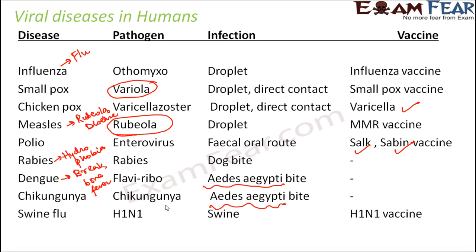Swine flu was all over the media a couple of years ago, with many people dying from it. This flu was caused by the H1N1 virus, which is a triple-reassorted flu virus. The infection spread through swine — pigs — and the vaccine available was the H1N1 vaccine.